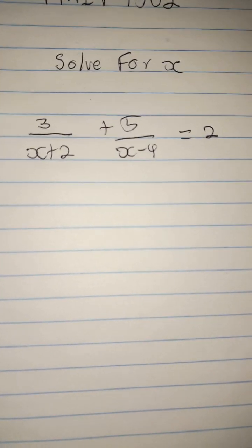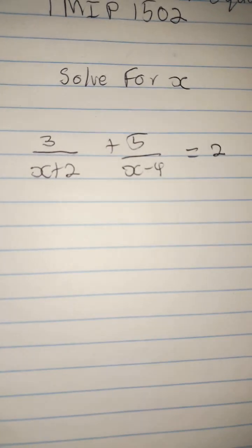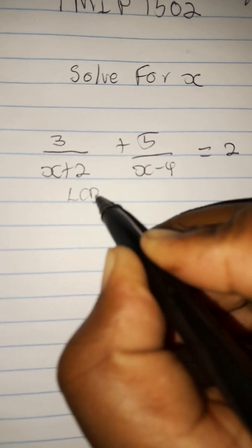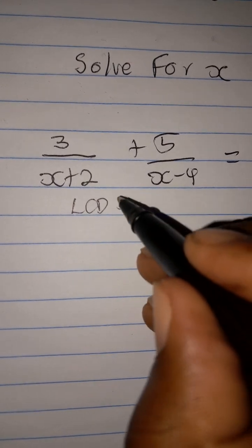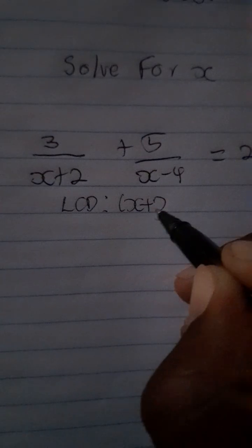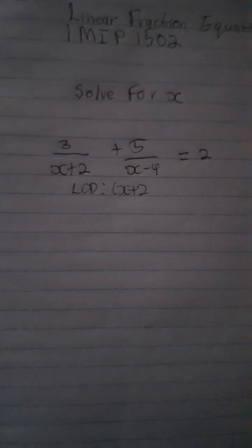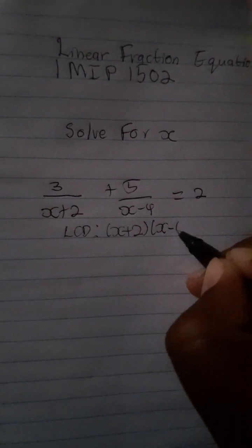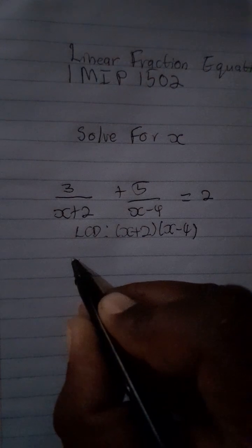We are given a linear fraction here. When you are given a fraction, the rule is that when there is addition or subtraction you must find an LCD — the Lowest Common Denominator. In this case we are going to have (x + 2) and (x − 4) as our LCD.